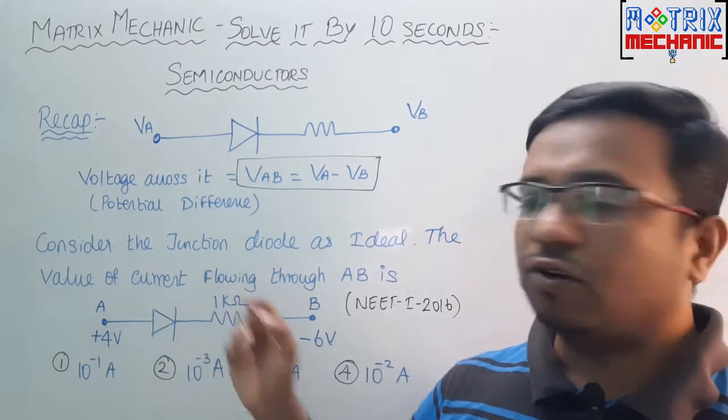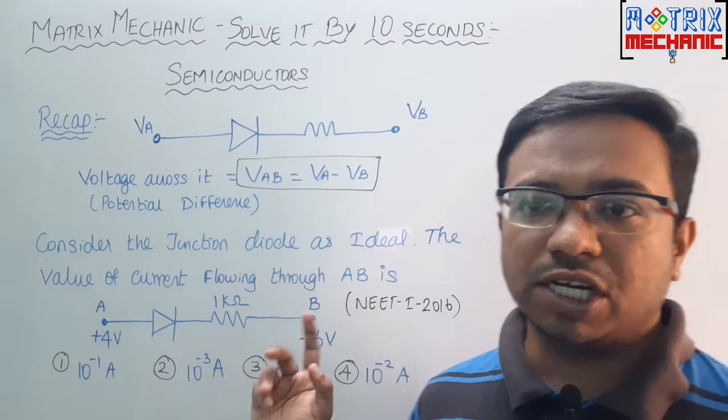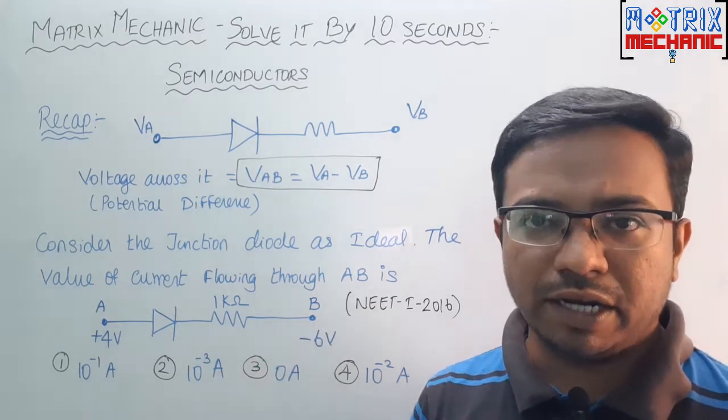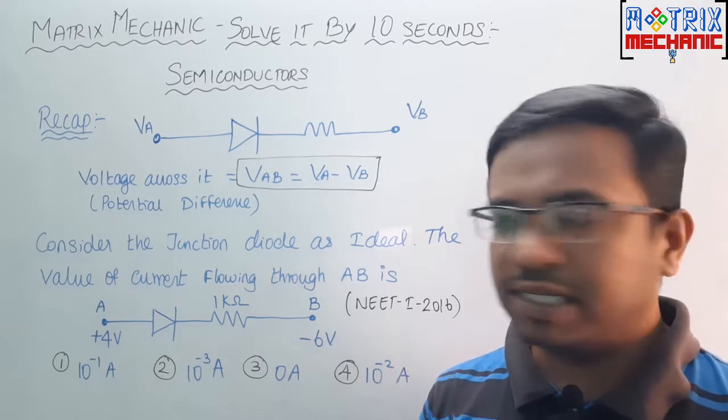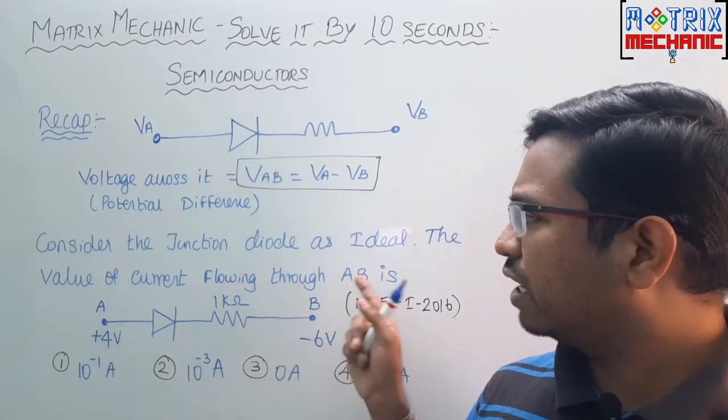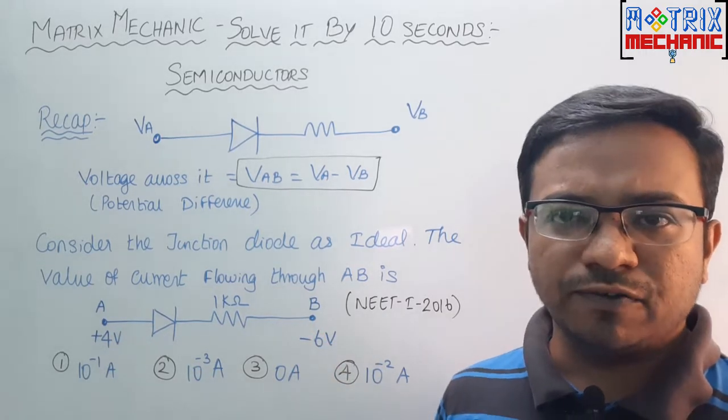So now we will ask: Consider the junction diode as ideal diode. This is a normal ideal diode, normal PN diode, normal characteristics. What is the current flowing through A and B? So what is the current flow?